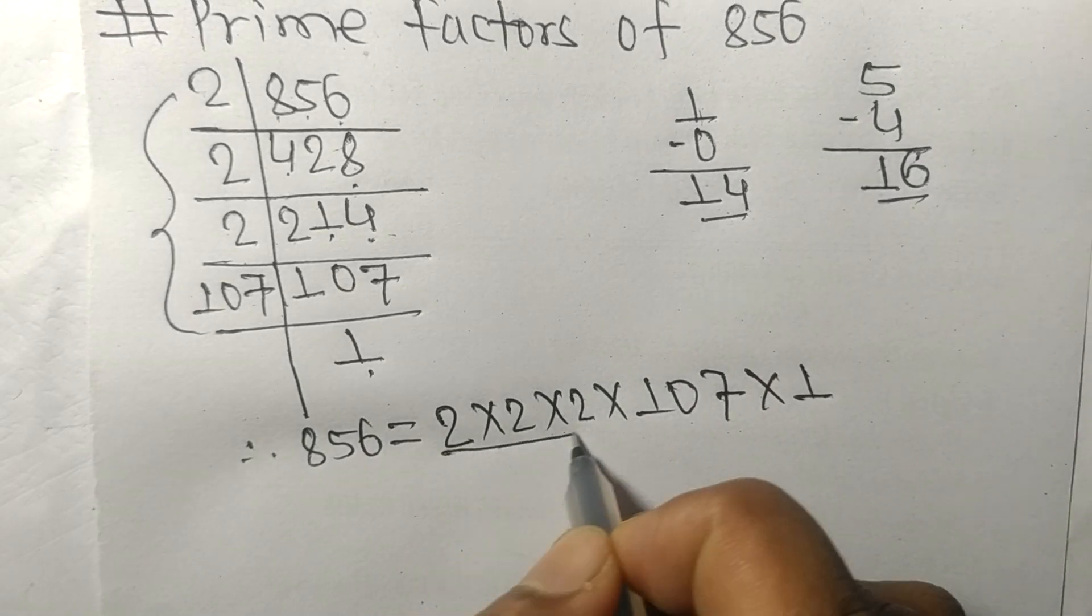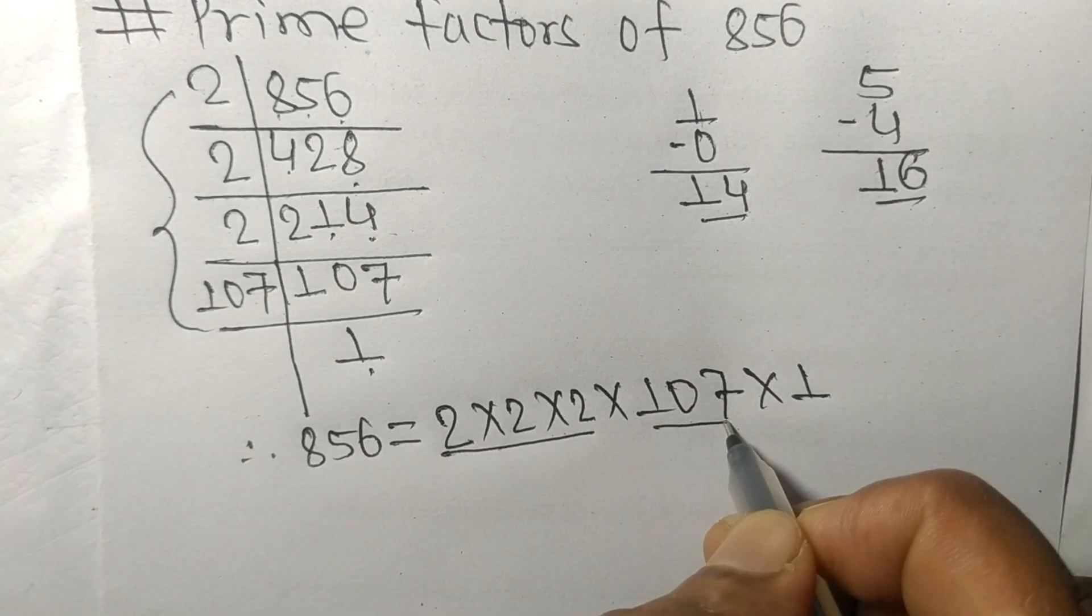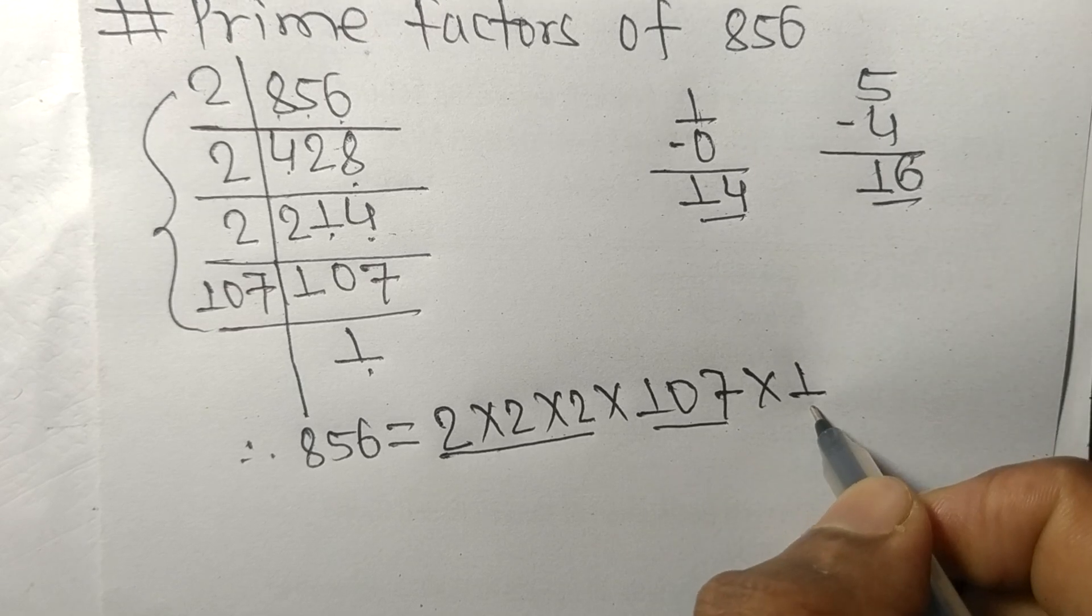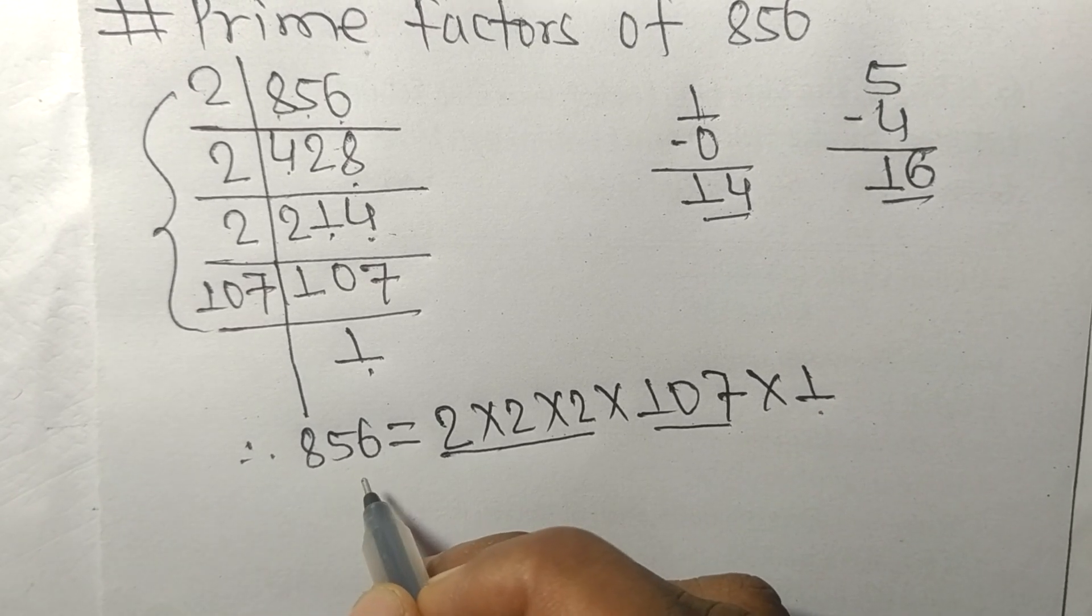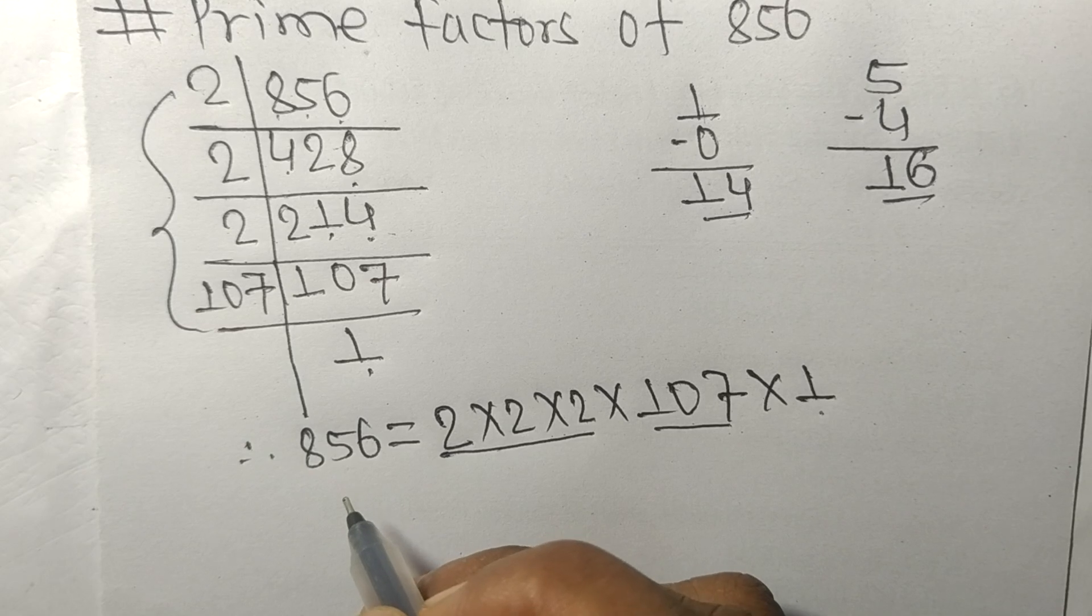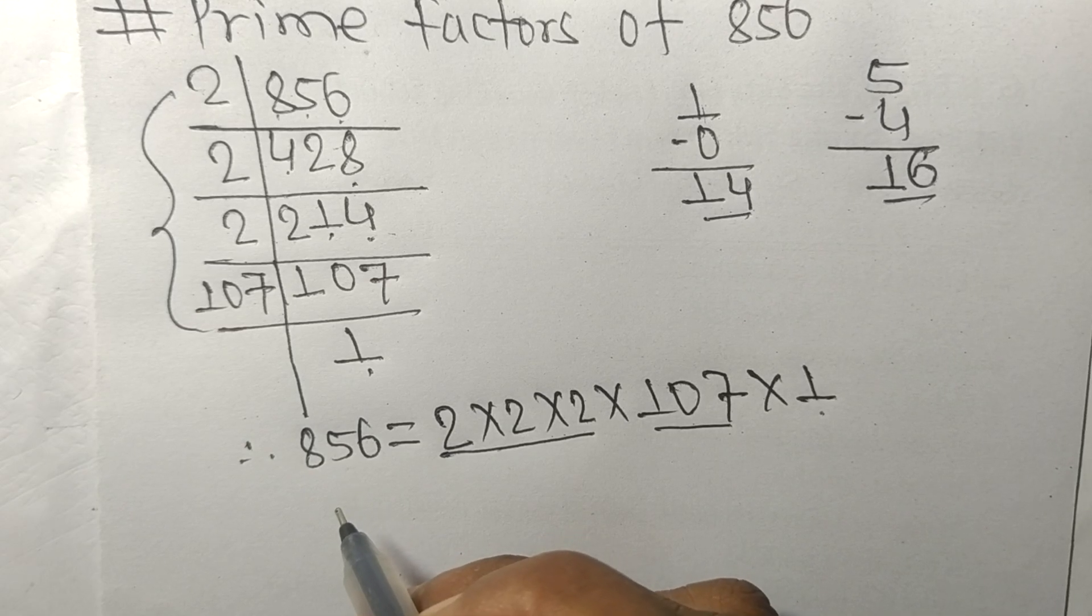From here it is 1. So 2, 107, and 1 are the prime factors of 856. So this much for today and thanks for watching.